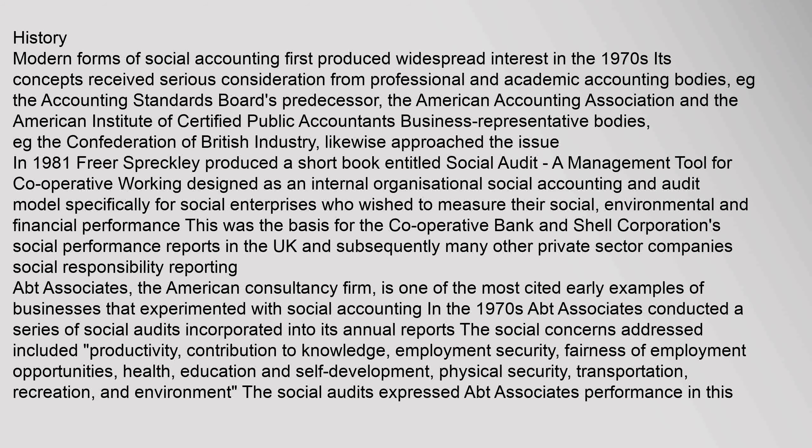Modern forms of social accounting first produced widespread interest in the 1970s. Its concepts received serious consideration from professional and academic accounting bodies, e.g. the Accounting Standards Board's predecessor, the American Accounting Association and the American Institute of Certified Public Accountants. Business representative bodies such as the Confederation of British Industry likewise approached the issue. In 1981, Freer Spreckley produced a short book entitled Social Audit: A Management Tool for Cooperative Working, designed as an internal organizational social accounting and audit model specifically for social enterprises wishing to measure their social, environmental and financial performance. APT Associates, the American consultancy firm, is one of the most cited early examples of businesses that experimented with social accounting in the 1970s. APT Associates conducted a series of social audits incorporated into its annual reports, addressing social concerns including productivity, contribution to knowledge, employment security, fairness of employment opportunities, health, education and self-development, physical security, transportation, recreation, and environment.